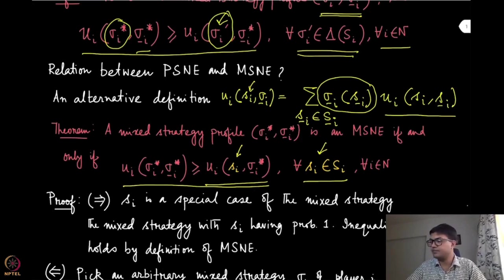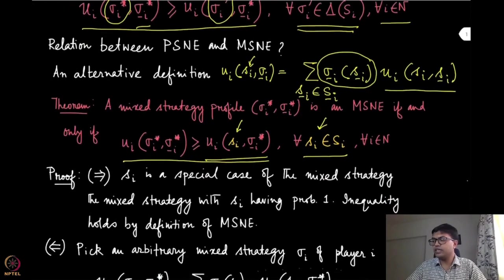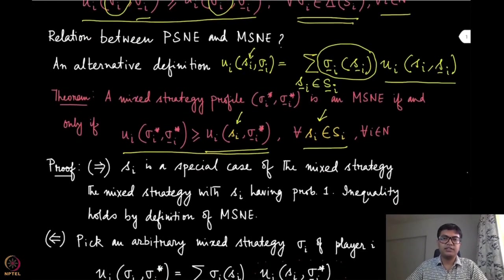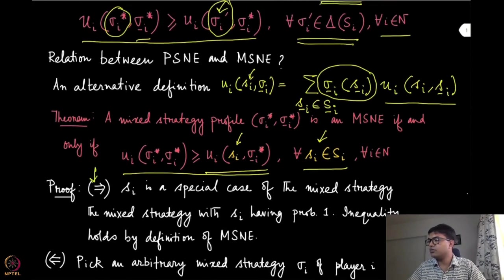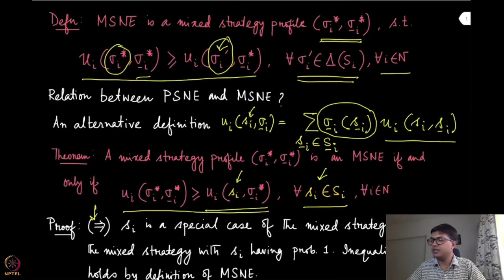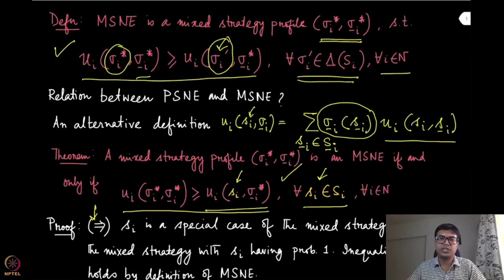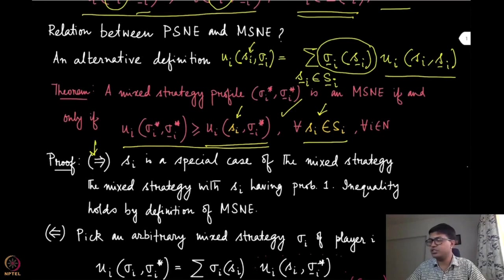Let's try to prove this. First, prove the only-if direction — the necessary direction — which is quite obvious: s_i is a special case of a mixed strategy. In this direction, we are trying to prove that if it is an MSNE by the original definition, then definitely this inequality should hold for pure strategies. This holds because s_i is a special case — you can think of s_i as a degenerate case of that probability distribution.